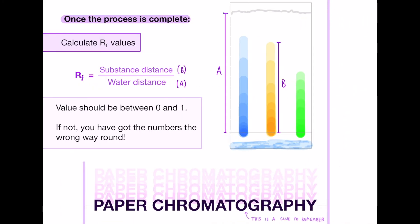Once you have achieved the paper chromatography you tend to want to calculate the RF values. This means how far the substance has been drawn up the page in relation to the distance the water or solvent has been dragged up the page. Your answer should be between zero and one, because the substance distance (b) should never be higher than the solvent distance (a). If you get the answer the wrong way around and your answer is above one, just flip the numbers in the fraction — the bottom number should always be bigger.